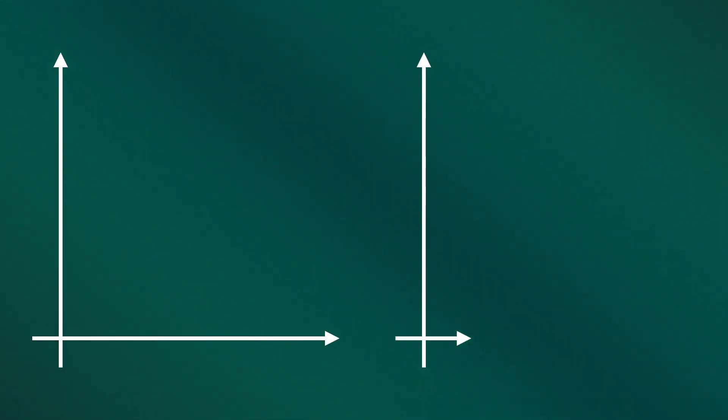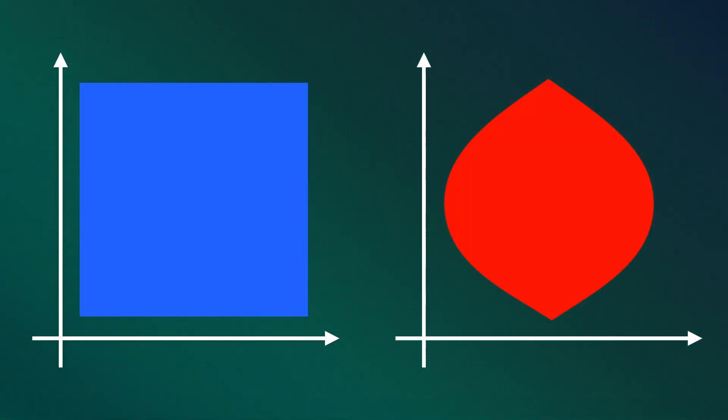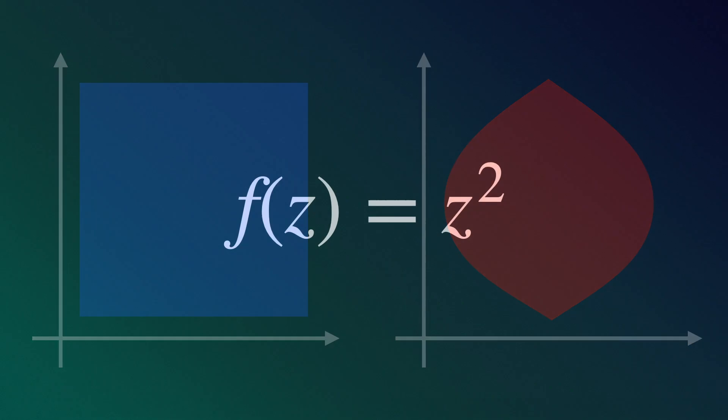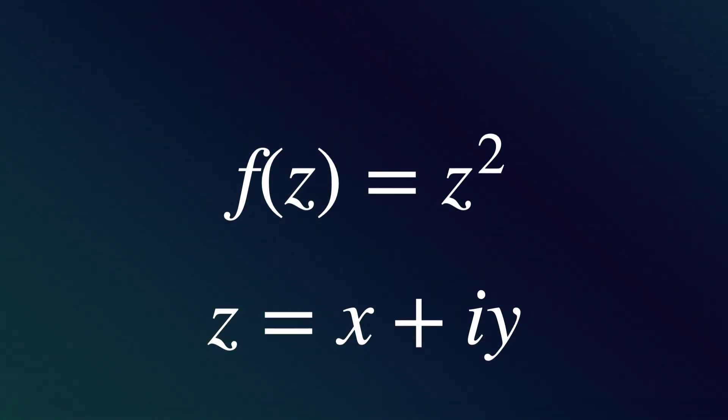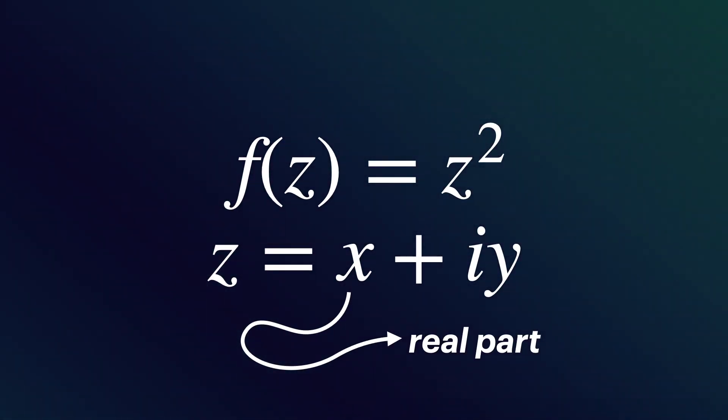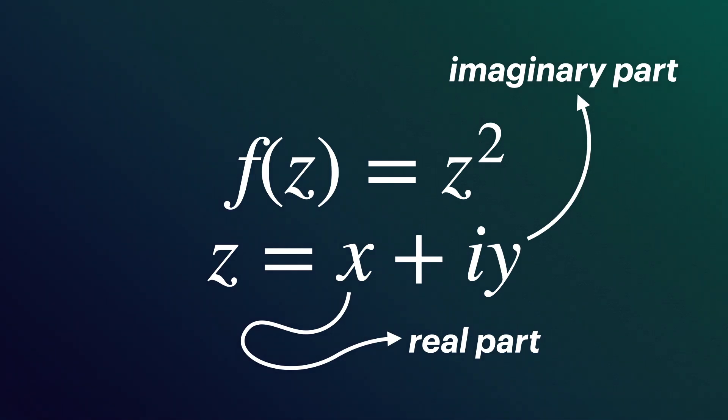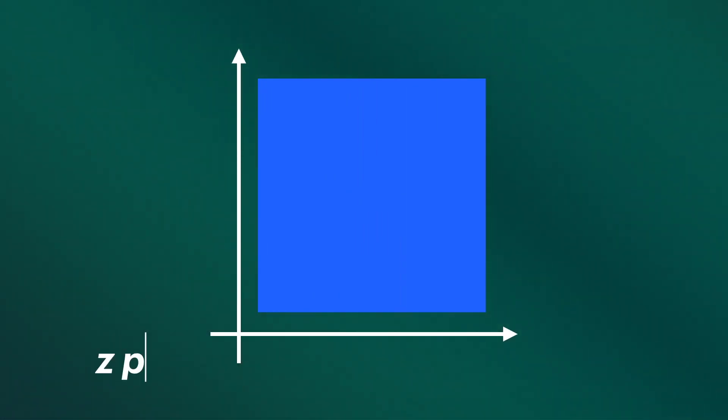In the provided graph, we can see a visual representation of a conformal transformation using a complex function. The function chosen for this demonstration is f(z) = z², where z = x + iy, with real part x and imaginary part y. The blue points represent a grid in the original complex plane z-plane. This grid is uniform, showing an evenly distributed set of points along both the real and imaginary axis.